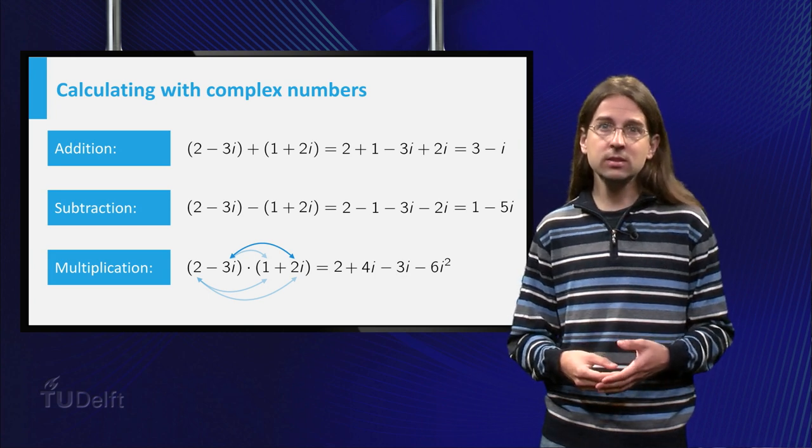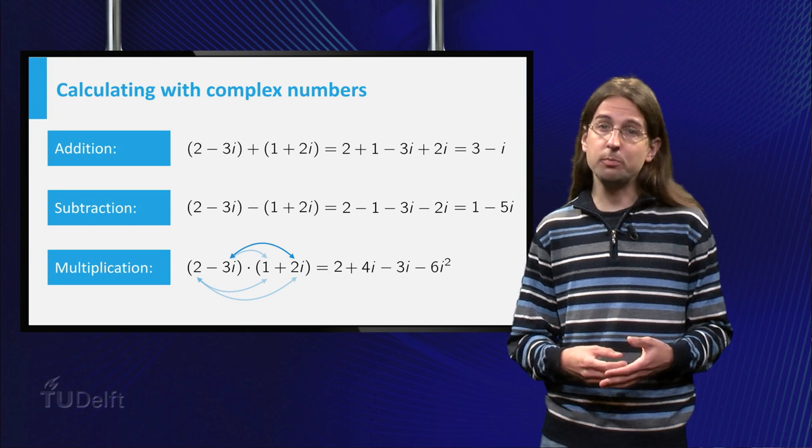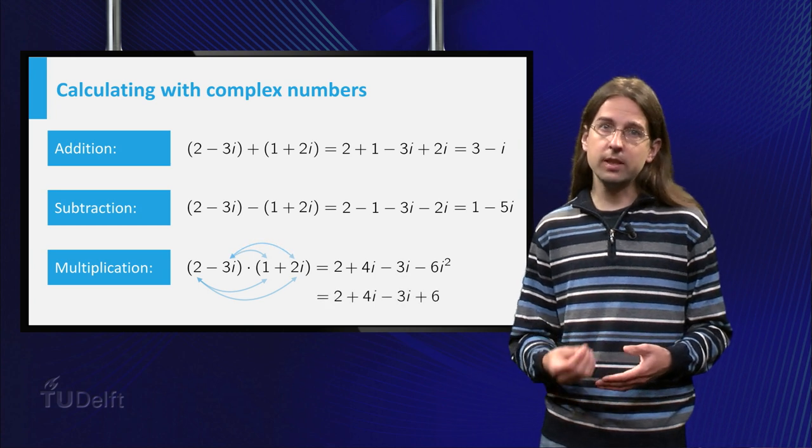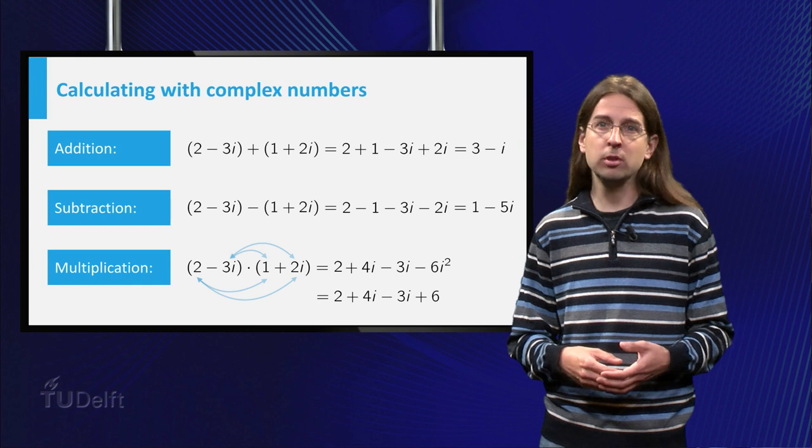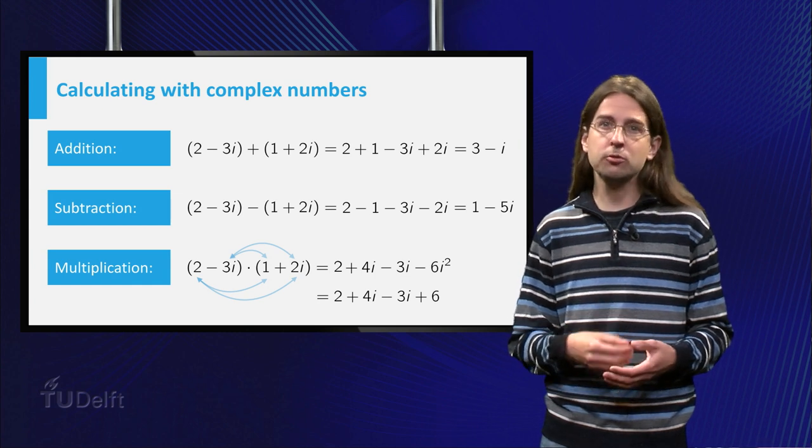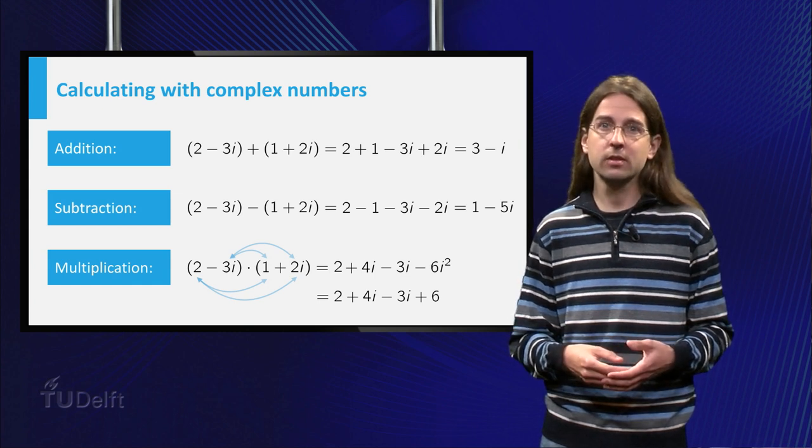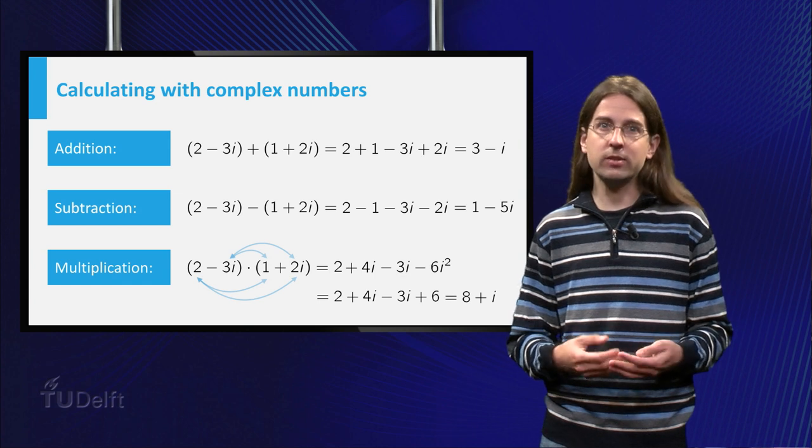Now we use the convention that i² equals minus 1 to find 2 + 6 for the real part, and 4 - 3 for the imaginary part, which yields 8 + i.